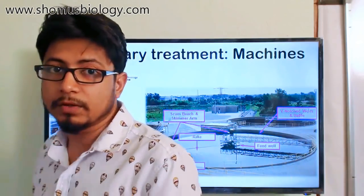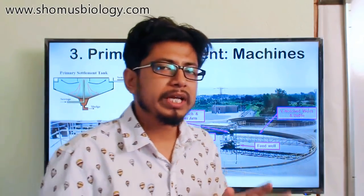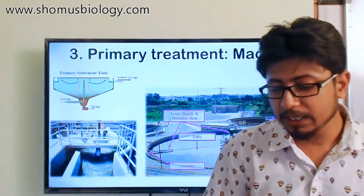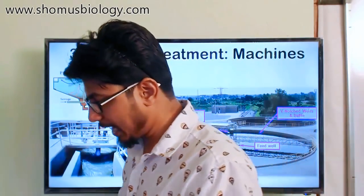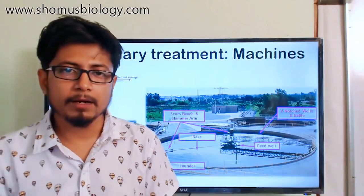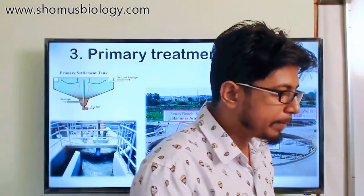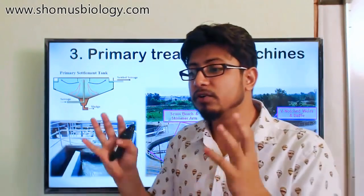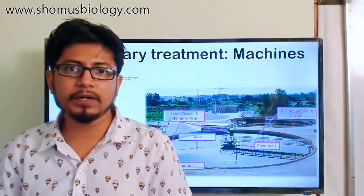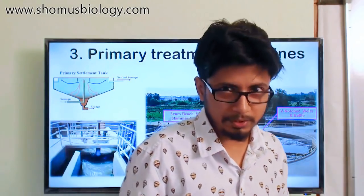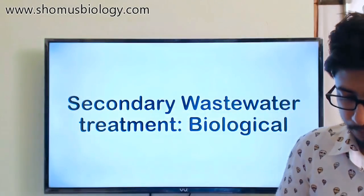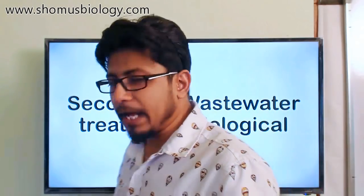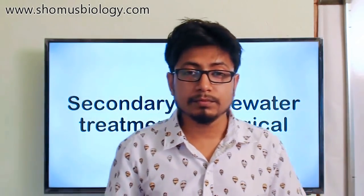That's how the primary settlement tank separates scum and sludge from the wastewater. Our goal in primary treatment is to separate as much solid material as possible using gravitational force, because if solid particles remain in the water they may damage further downstream processes of wastewater treatment.